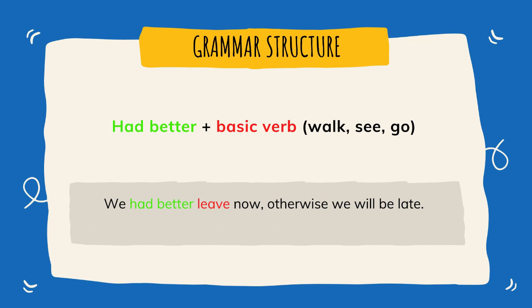So let's move on to the structure of this grammar. The structure for 'had better' in the positive is simply: had better + a basic verb, like walk, see, or go. The example sentence is: 'We had better leave now, otherwise we will be late.' You can see: had better + leave. 'Leave' is the basic verb.